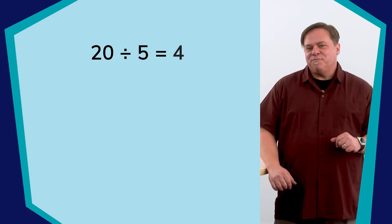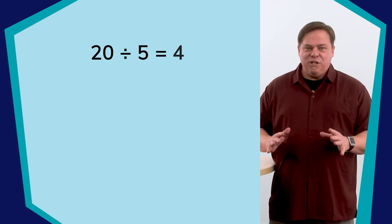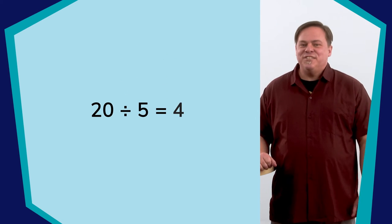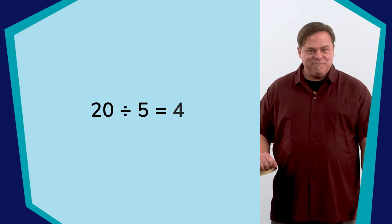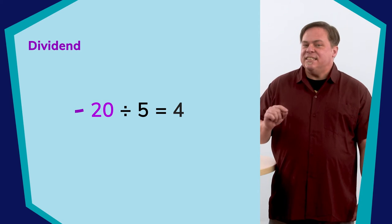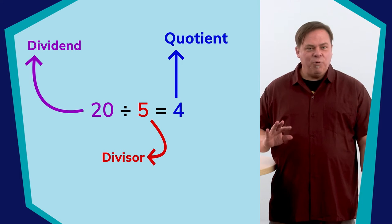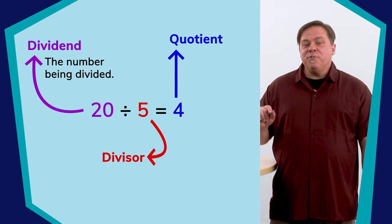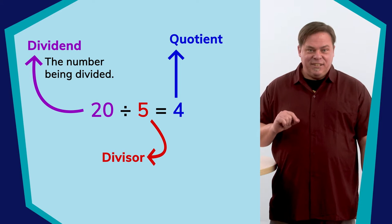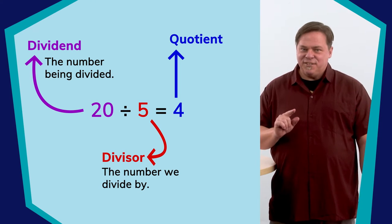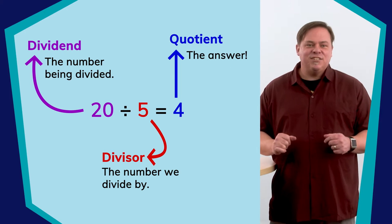Going back to that example, twenty divided by five equals four. There are some special math words to use to describe the parts of that equation. Twenty is the dividend, five is the divisor, and four is the quotient. The number being divided is the dividend. The number we divide by is the divisor, and the answer is the quotient.